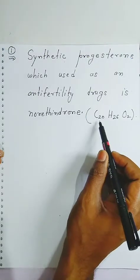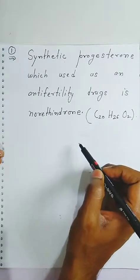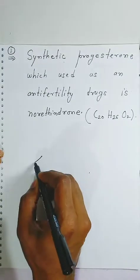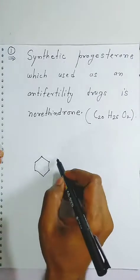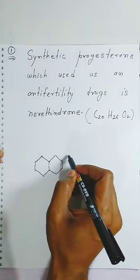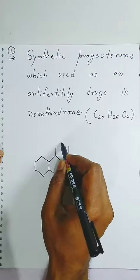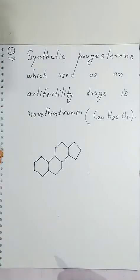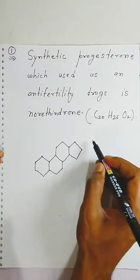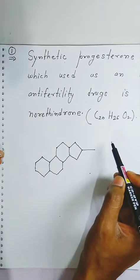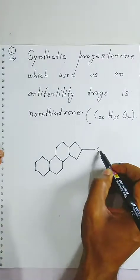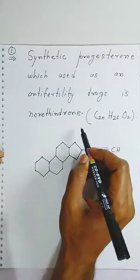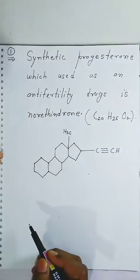Since C20 means 20 carbons, one benzene ring contains 6. So we will have three hexagonal structures and one pentagonal structure — this is the basic unit. Because it is also called ethine, there will be a carbon-carbon triple bond here. It will also contain one more methyl group, that is CH3. This accounts for C20.